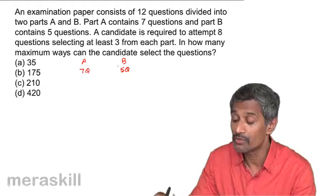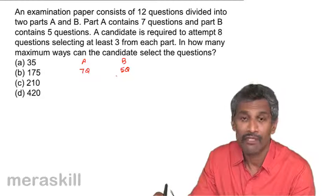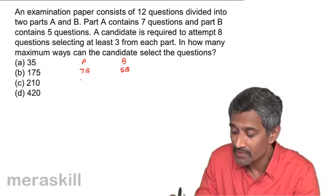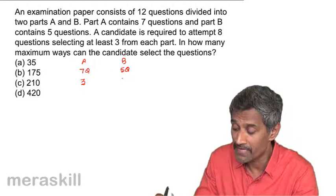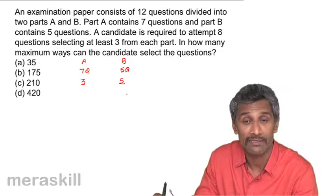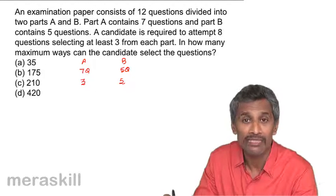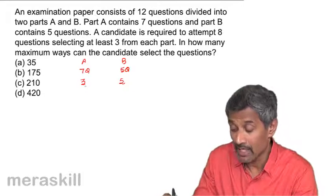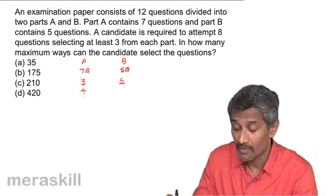He could choose at least three, which means he would choose three, four, or five — he cannot go beyond that. Suppose he chooses three from Part B; since the total is eight, he has to choose five from Part A. It is told 'at least', not 'at most', which means the minimum chosen is three.